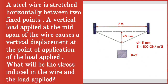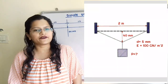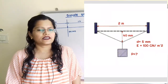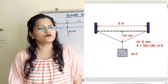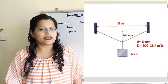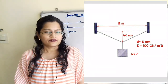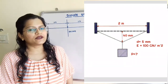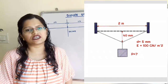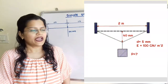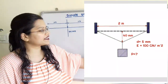Given question: A steel wire is stretched horizontally between two fixed points. A vertical load applied at the mid-span of the wire causes a vertical displacement at the point of application of the load. Wire of 2 meter length and 5 millimeter diameter is connected between two fixed supports. Load P is applied at the midpoint. The deflection delta L at the point of load application is equal to 40 millimeter. Young's modulus for this wire is given as 100 giga newton per meter square.